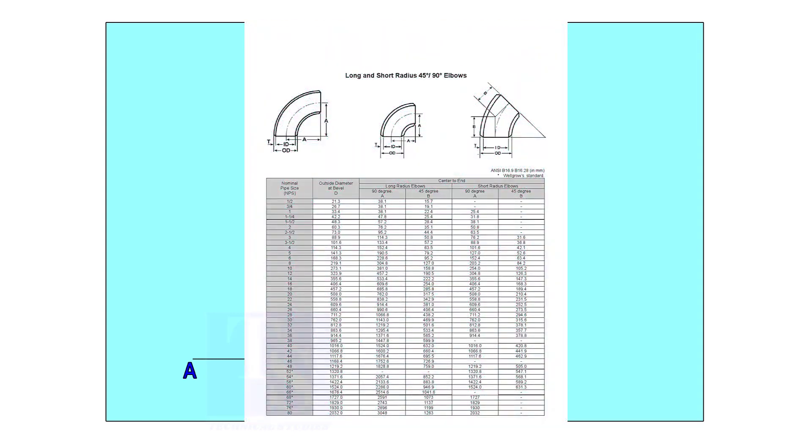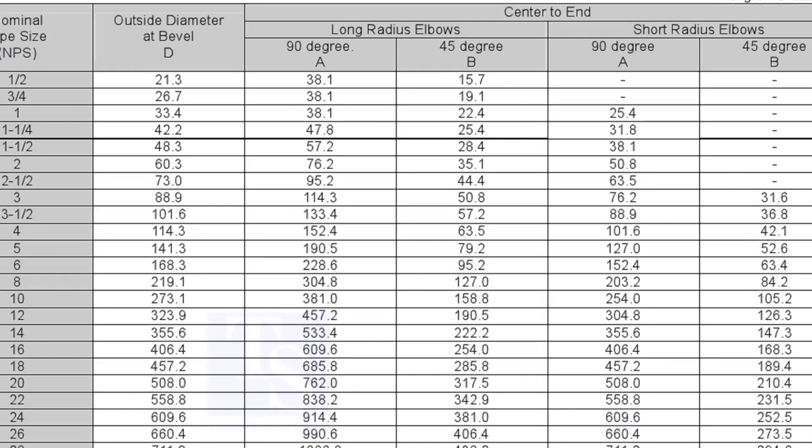Let us mark a 25-degree elbow on a 16-inch large radius elbow. Mark line AB and a perpendicular line BC. Let us check the center radius of 16-inch long radius elbow.